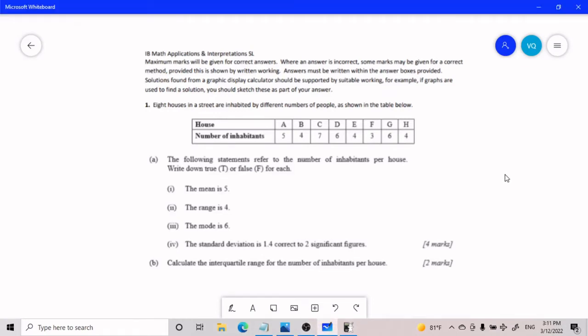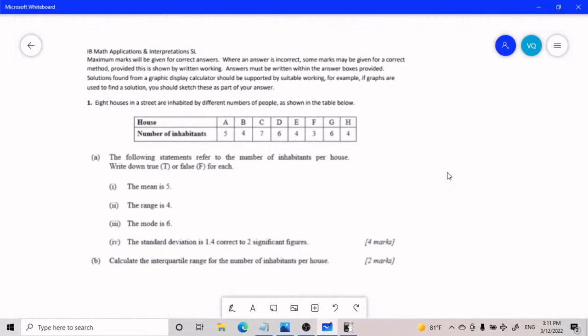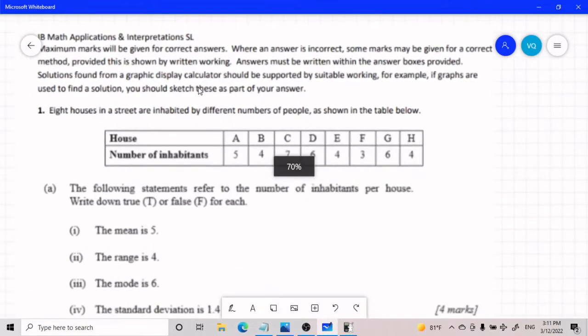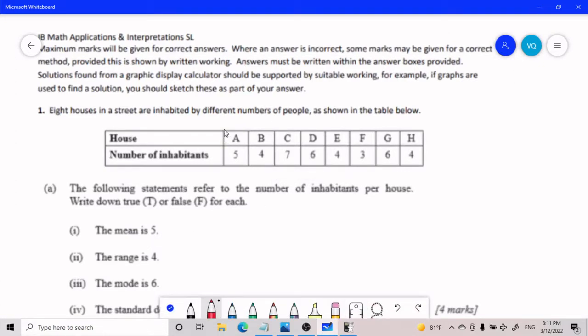Hello everybody, today we will be going over a statistics problem at the IP Math AISL level. So here we have eight houses in a street that are inhabited by different numbers of people as shown in the table below. In house A we have five people living inside of it, in house D we have six people living inside of it.